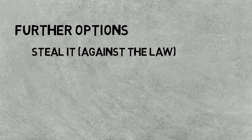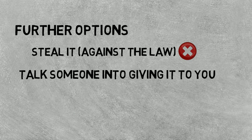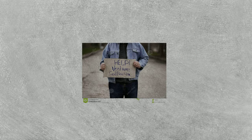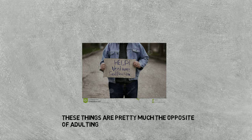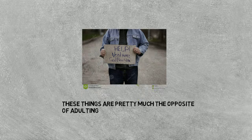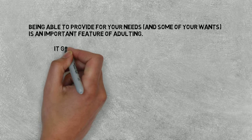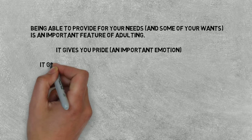There are some further options: you could steal it, which is against the law and not recommended. You could talk someone into giving it to you — this is called begging. These things are pretty much the opposite of adulting.